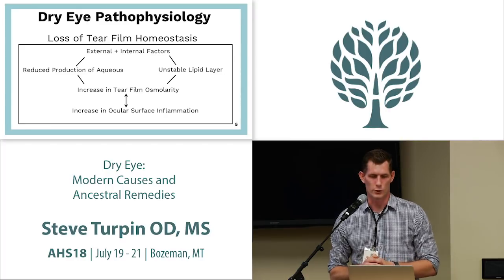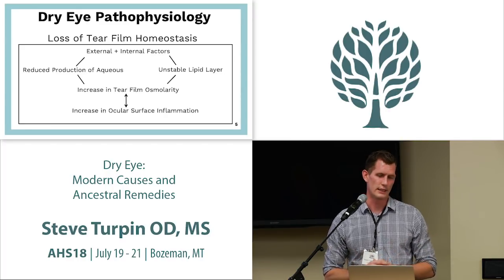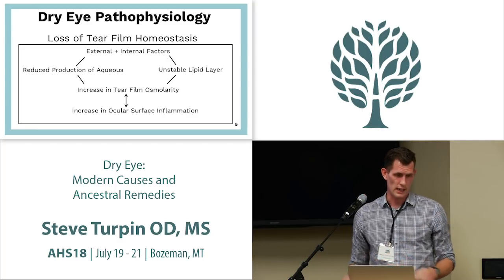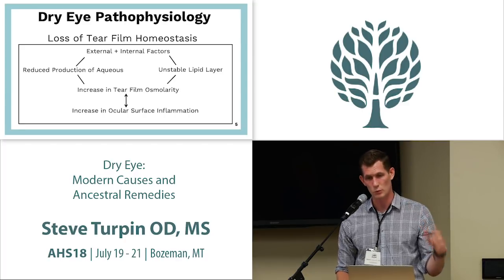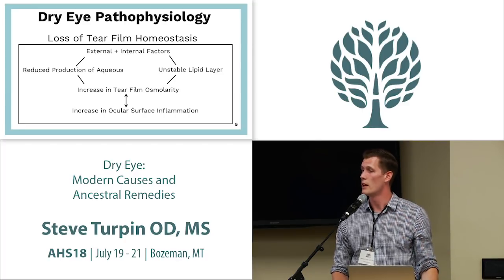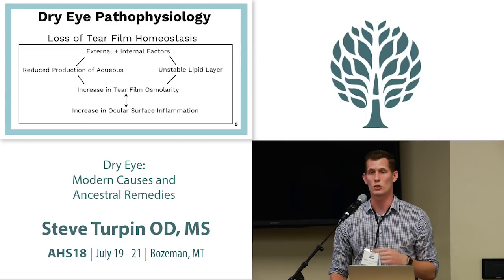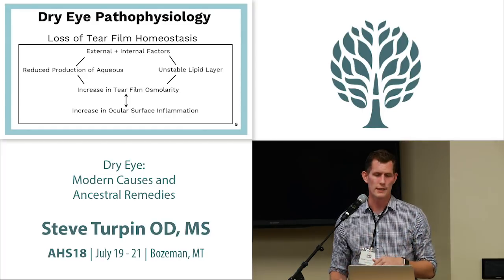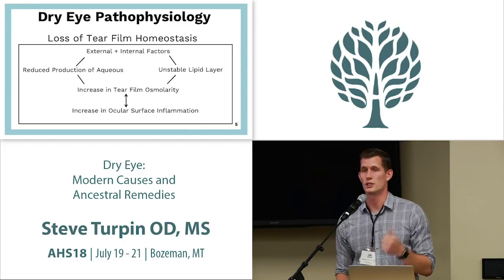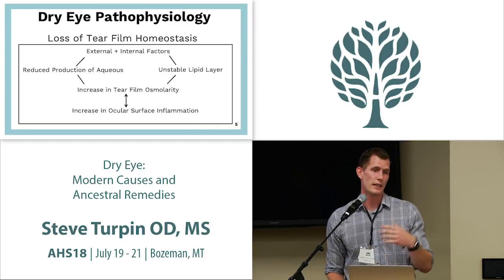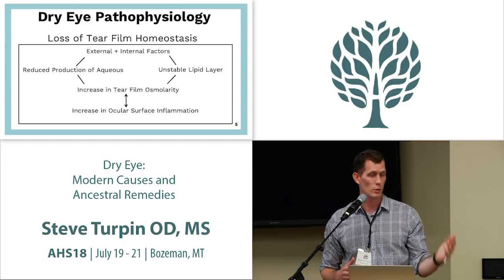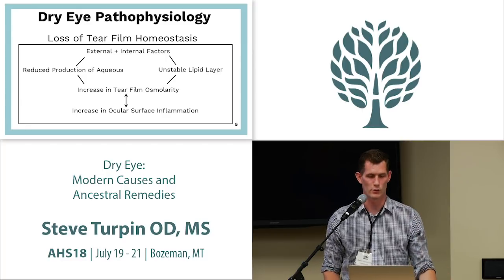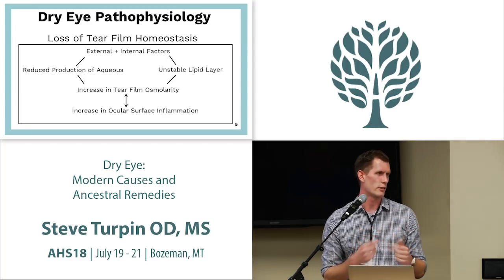Increased tear film osmolarity leads to increased ocular surface inflammation — a giant feedback loop of inflammation that causes decreased quality of tear components produced. It's a two-way street: systemic inflammation can increase tear film osmolarity by producing inflammatory factors, and that increased osmolarity further drives inflammation. They feed each other in a vicious cycle.